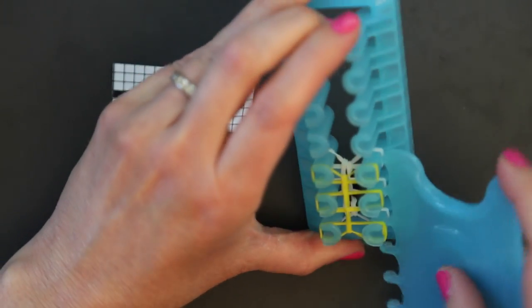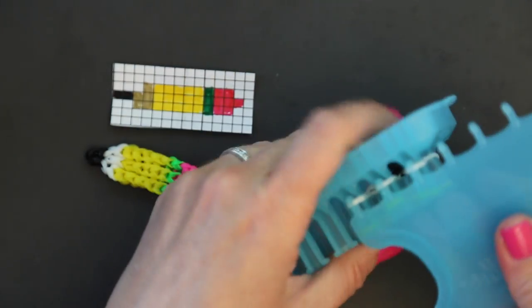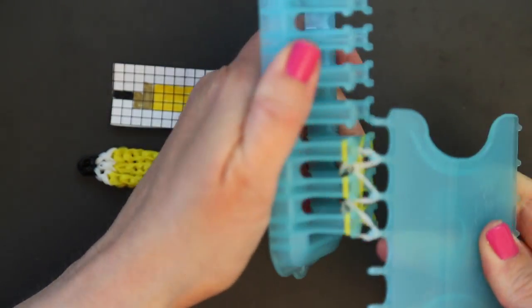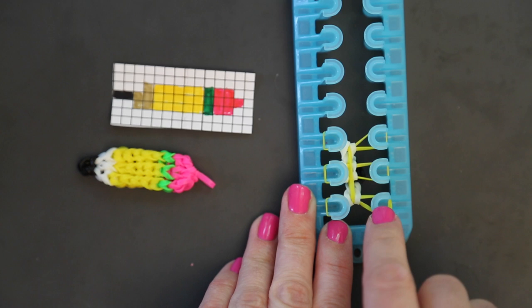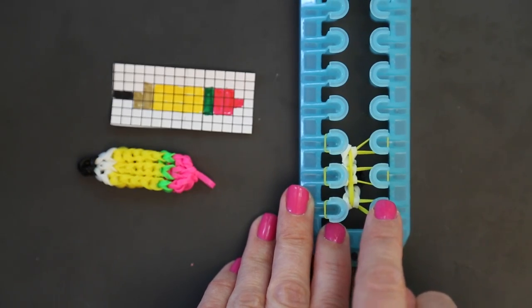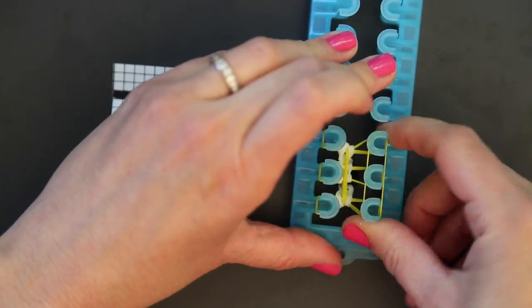Bring your connector band up to the center. And use your comb to catch the three bands on the bottom. And bring them up and over on both sides. A single connector band in the color of the body of the pencil. Followed by three bands straight across the pegs.